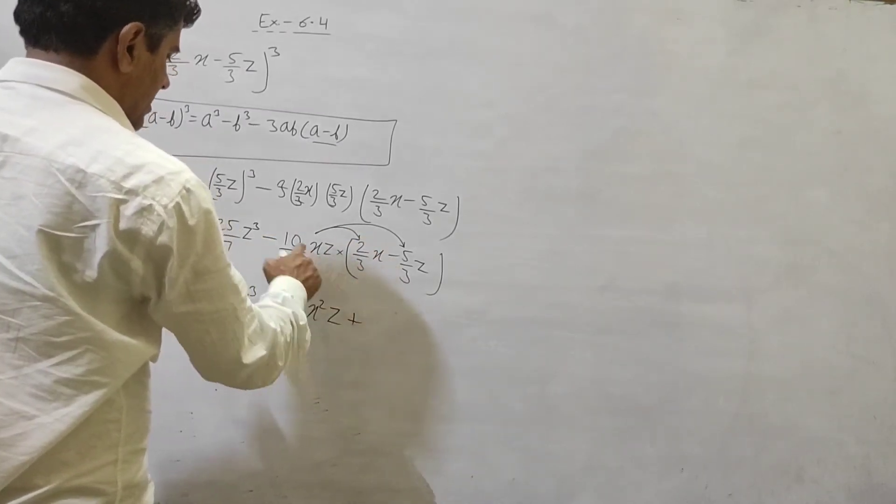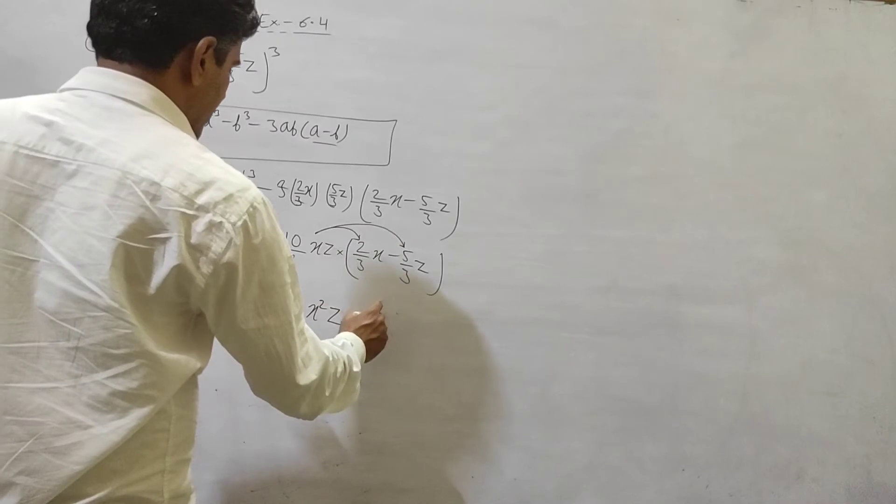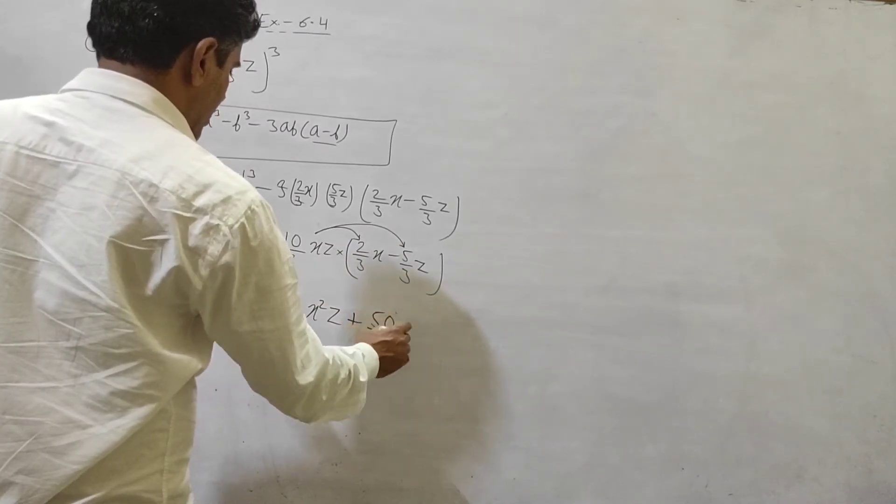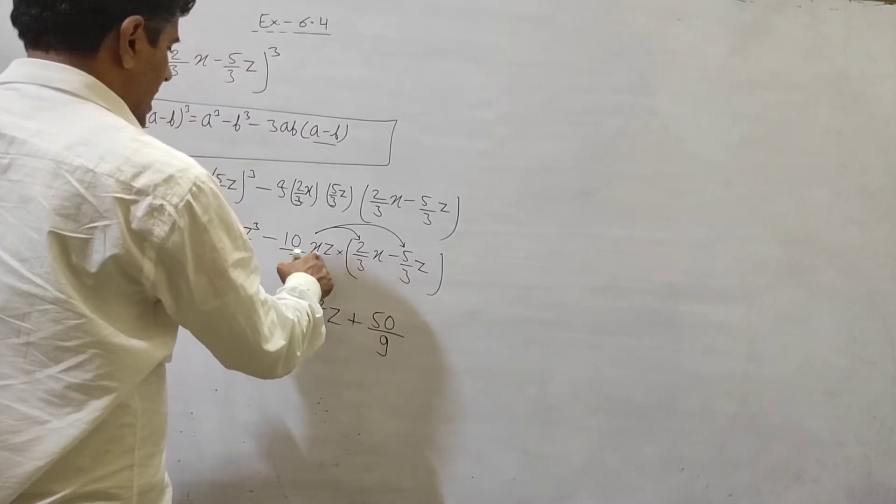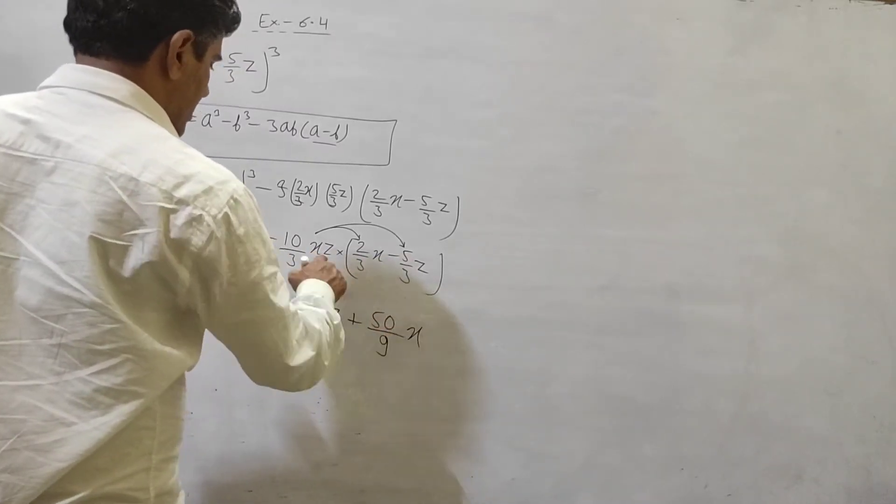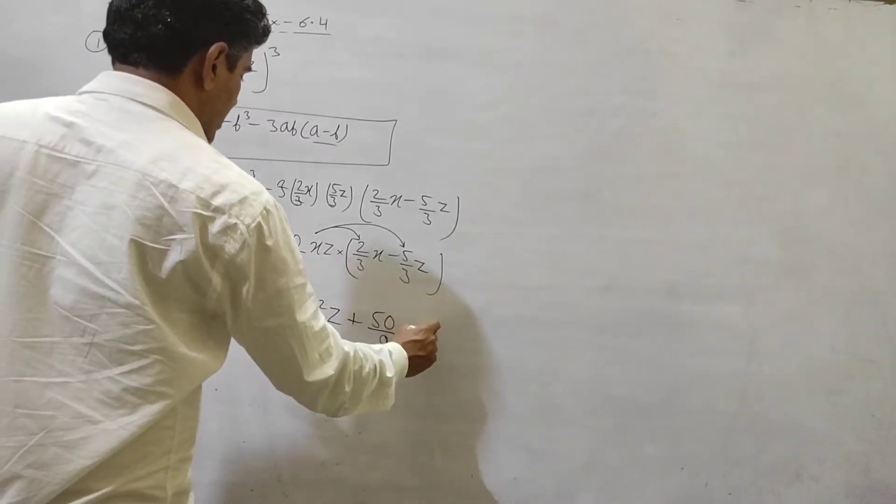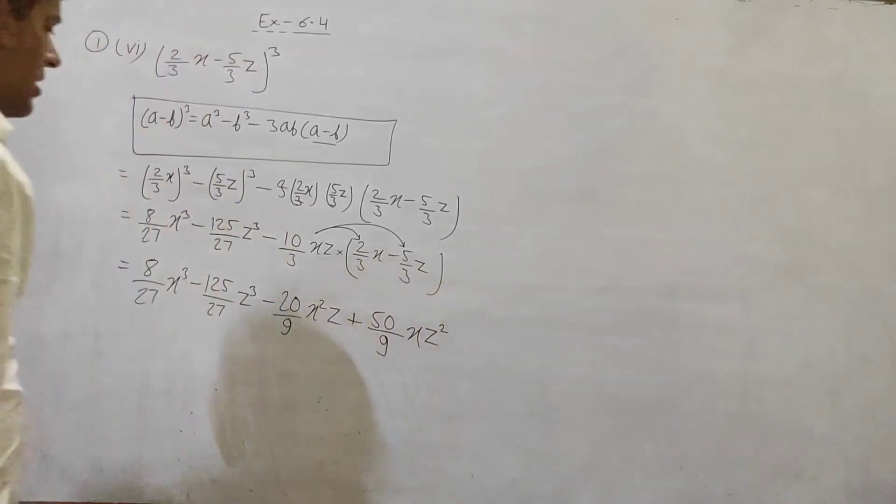Minus minus plus, 10 multiply 5, 50. 3 multiply 3, 9. x, z multiply z, z square, z raise to power 2.